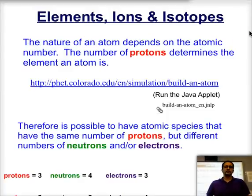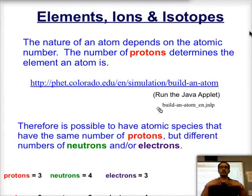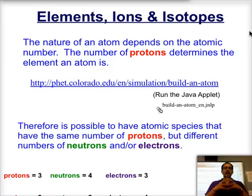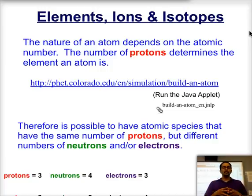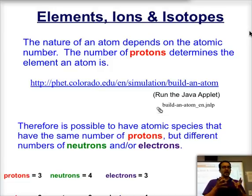Welcome to today's lesson. We're going to be talking about how elements and atoms are made and how the composition of protons, neutrons, and electrons can differ to make either neutral atoms, ions, or even isotopes.